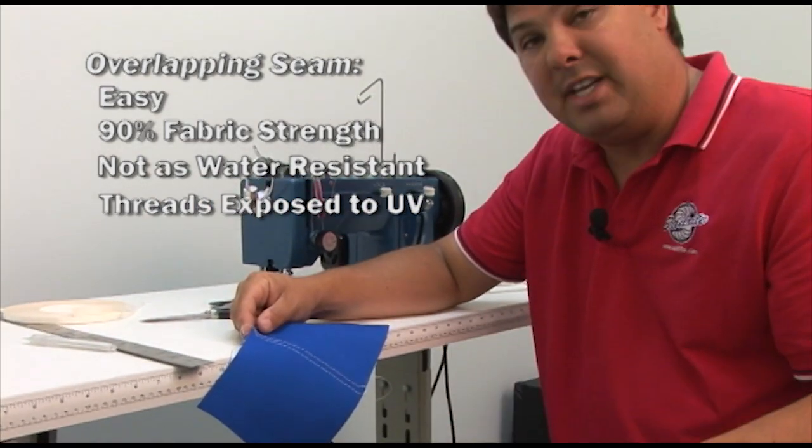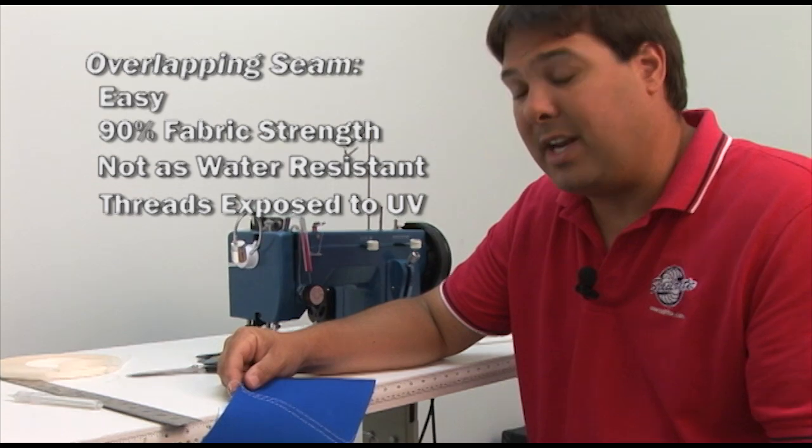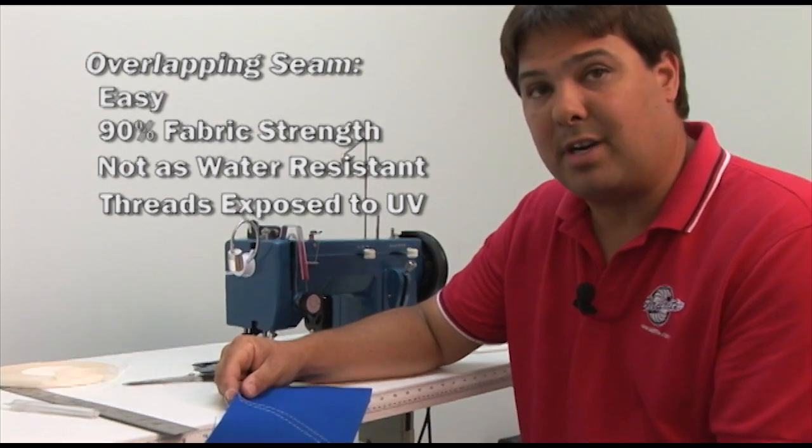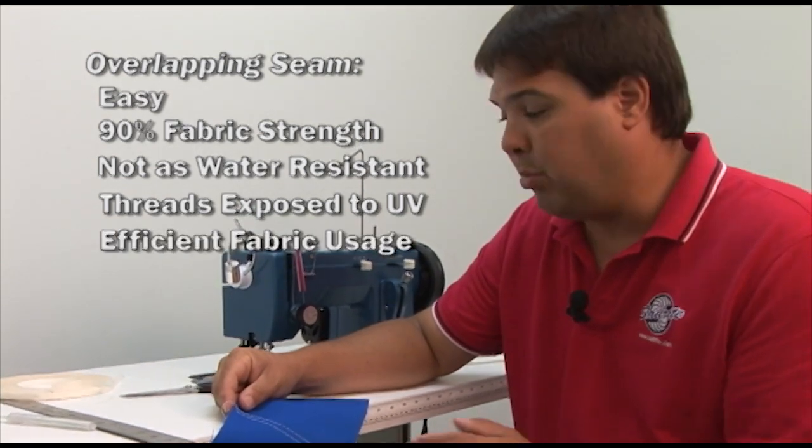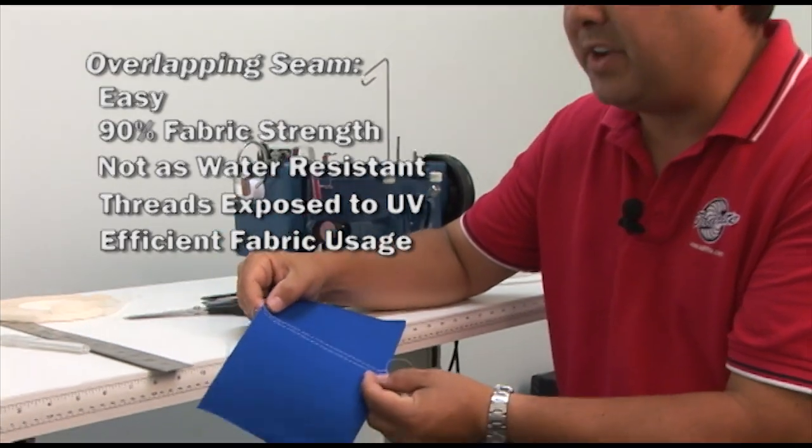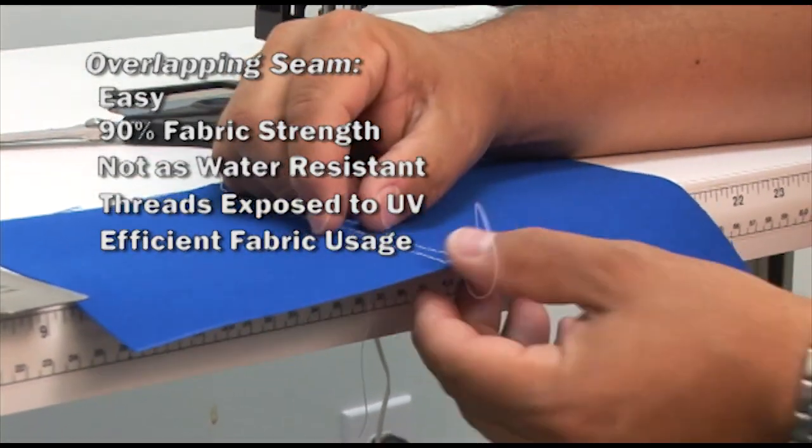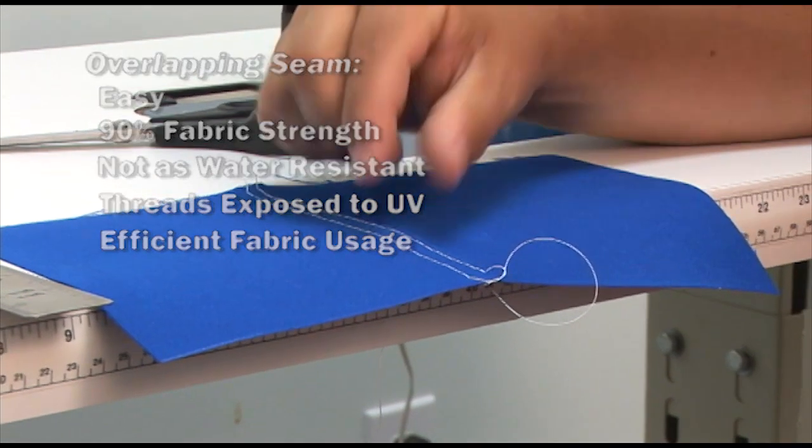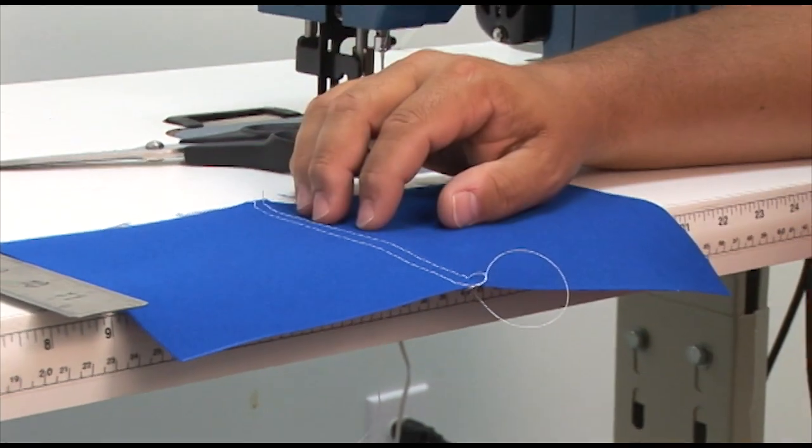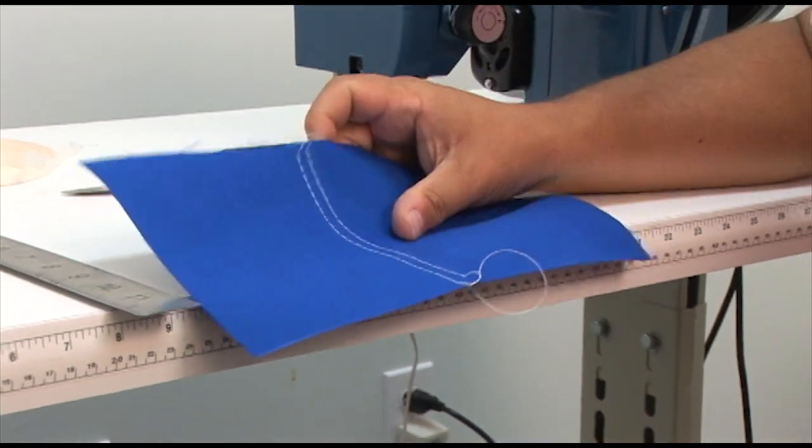So even though it's easy, there are definitely some related issues with this type of a seam construction. The other thing that I should point out is that this seam is efficient from the standpoint that given that we did a half inch seam here, it only consumes a half inch of material to create that seam. And that's really everything you need to know about that type.